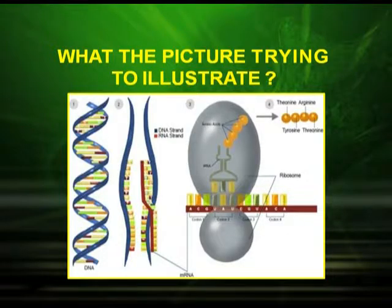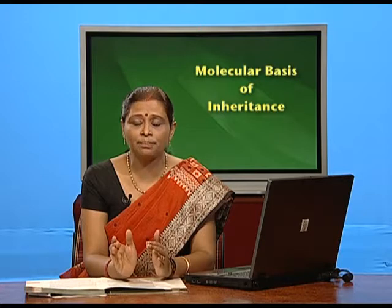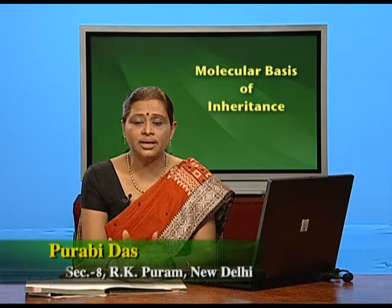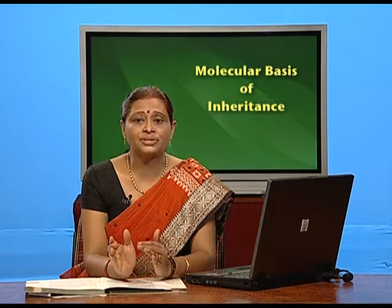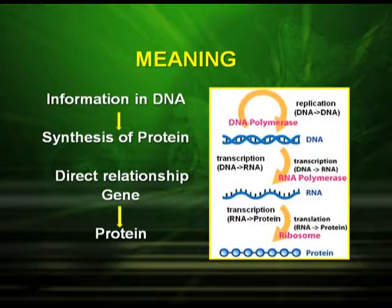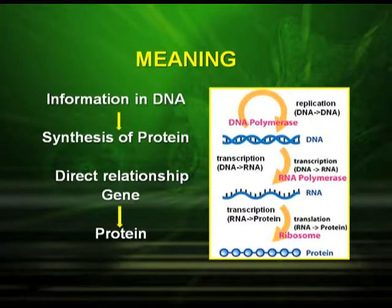What does this picture signify? At some places you can see that the DNA is regulating the gene expression, that is the formation of proteins. That means the information in DNA leads to the synthesis of protein. So there is a direct relation between gene and protein.